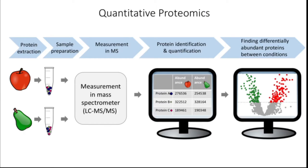The aim of a quantitative proteomics approach is to identify and quantify as many proteins from each sample as possible, and then to find proteins that are differentially abundant between the conditions of interest. The experiment starts by extracting proteins from the samples, preparing them for measurement, and acquiring data by Liquid Chromatography Tandem Mass Spectrometry, which is then analyzed via quantitative proteomics and statistical software.